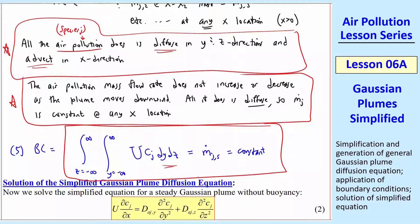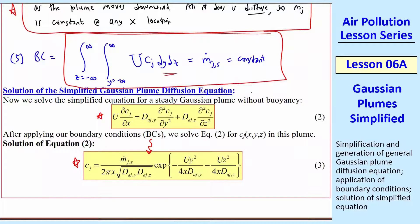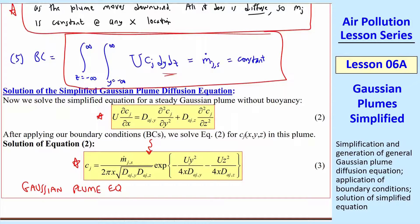Finally, we're ready to solve this. Here's equation 2, our simplified equation, with five boundary conditions. Solving it involves quite a lot of algebra. The final solution is the Gaussian plume equation — we'll call it equation 3. We'll simplify it a little more next time, but notice the Gaussian behavior: these are Gaussian-type terms — exponentials with a negative variable squared — which is exactly what we want. We'll do some examples of how to use this equation in the next several lessons.